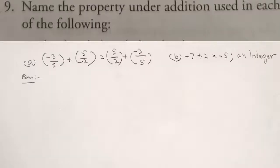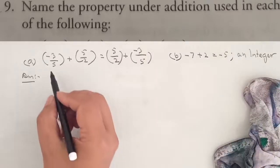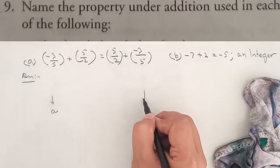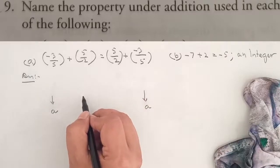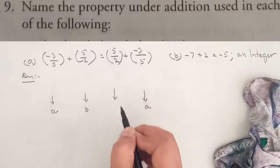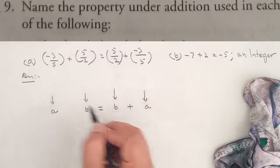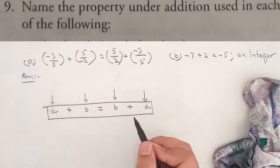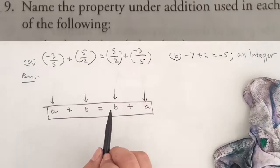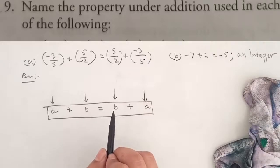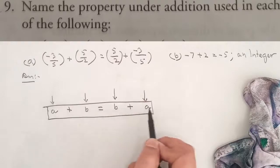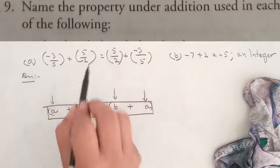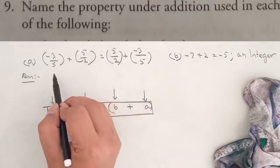Question 9: Name the property under addition used in each of the following. If we consider minus 3 by 5 as a and 5 by 2 as b, then a plus b equals b plus a. When any number in addition follows this form, we identify it as the commutative property of rational numbers.